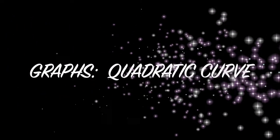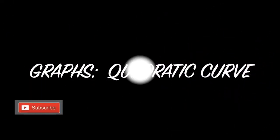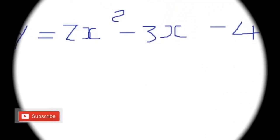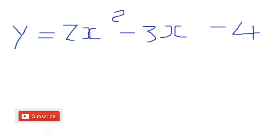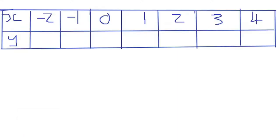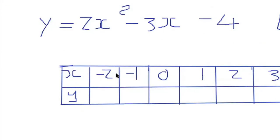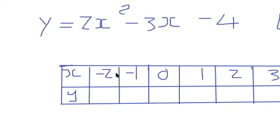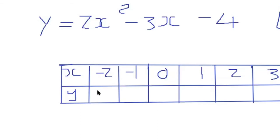Today we'll be doing graphs. We'll be graphing a quadratic curve which is 2x squared minus 3x minus 4. We need a table in order to graph this. The table is going to be from negative 2 to positive 4. We usually are given a range, and I'll be substituting x values into the quadratic to get the y values.